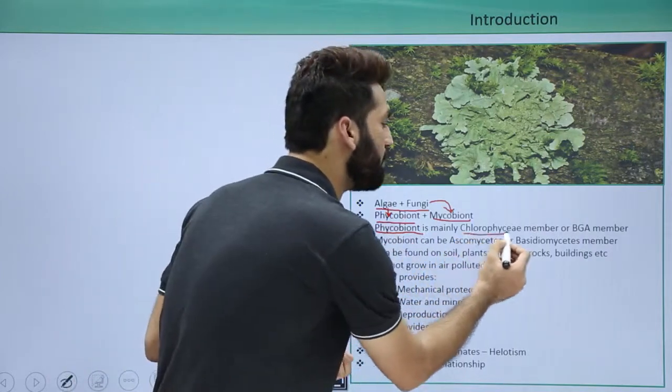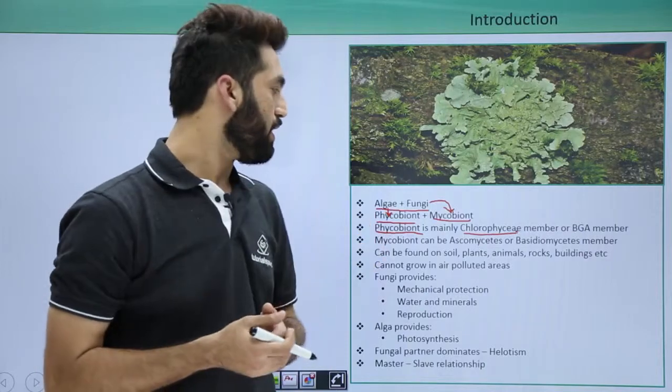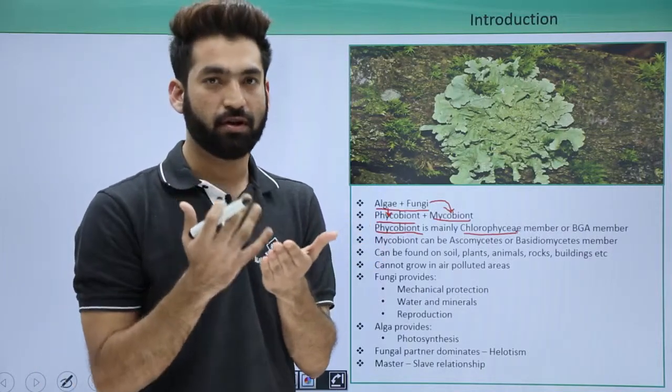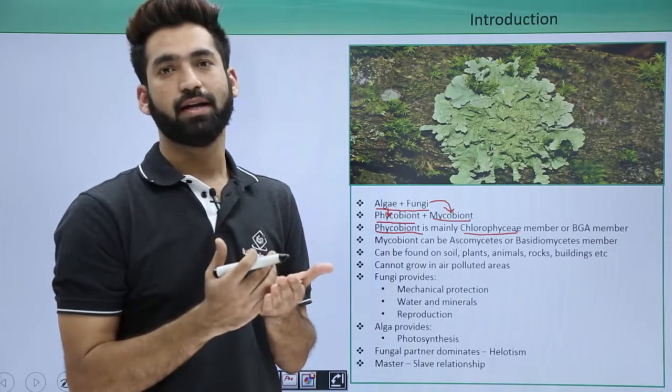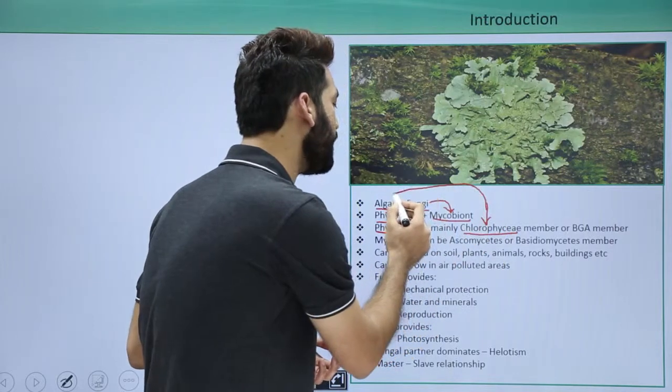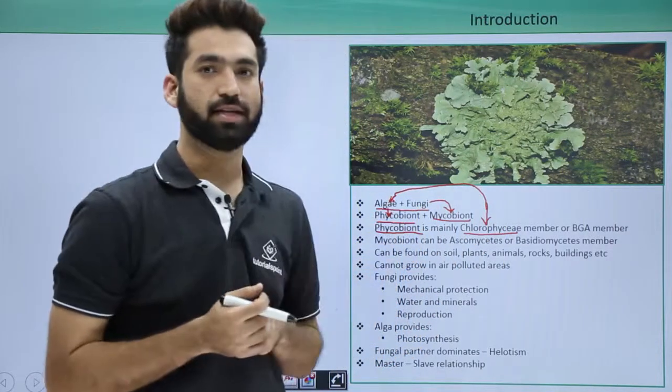This is basically the member of Chlorophyceae. Now let me tell you that there are basically algae when you talk about, there are green algae, there are red algae, there are brown algae. So green algae belong to Chlorophyceae and they basically are seen when you talk about the lichen association.